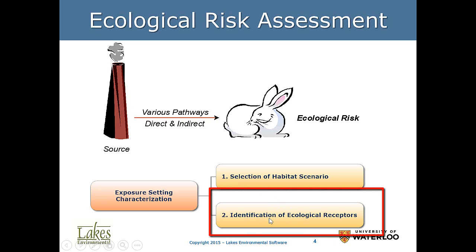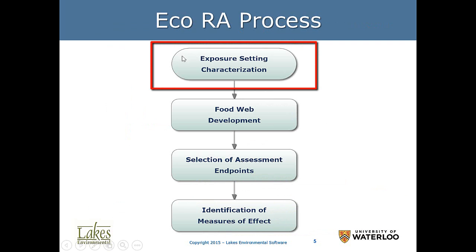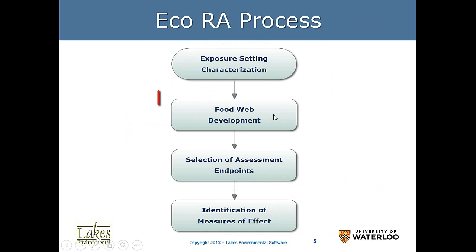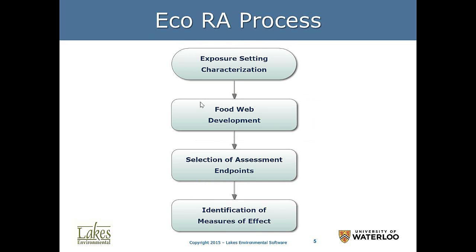We are also going to identify the ecological receptors within that food web, and this is the process to conduct a risk assessment. We explained the exposure setting characterization, and then we need to define the food web that represents that habitat. The food web will not include absolutely every animal — we need to select an animal that will represent other animals in the same categories.